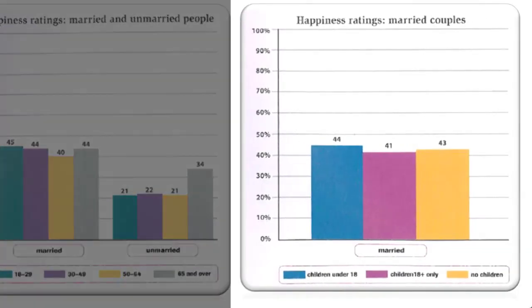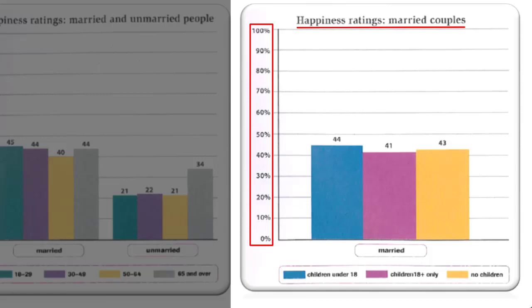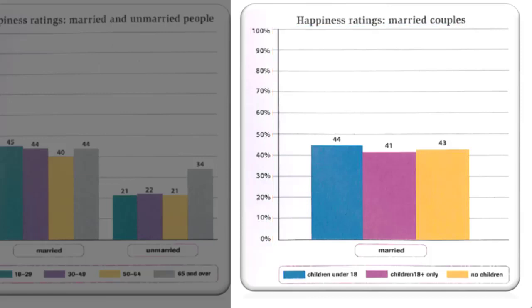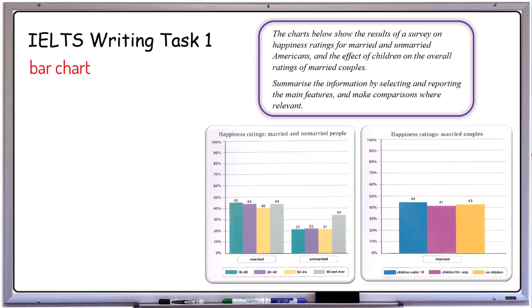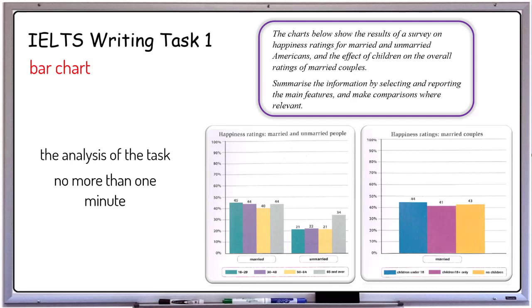Let's move on to the second chart. The second bar chart represents happiness ratings among married couples. These ratings are also presented in terms of percentages. As can be seen, the only distinguishing factor here is whether or not couples have children. This is exactly what you are supposed to do in the first stage of your pre-writing — the analysis of the task. It should take no more than one minute of your time.